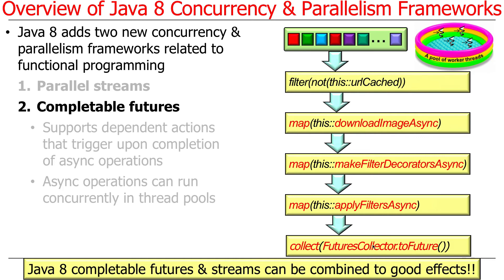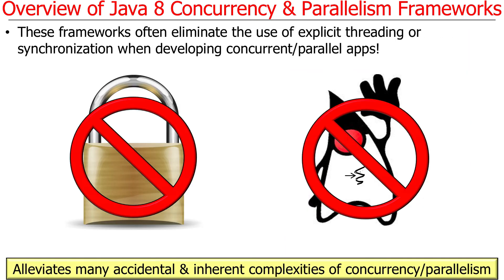You can combine streams with completable futures — like peanut butter and chocolate — for a result that is super cool and very effective. One key benefit is that application code often doesn't require any changes with respect to synchronization or explicit threading. You typically don't have to write code to acquire and release locks or spawn threads — all that is handled by the frameworks. Many accidental and inherent complexities of concurrency and parallelism just evaporate because the programs are embarrassingly parallel by design.